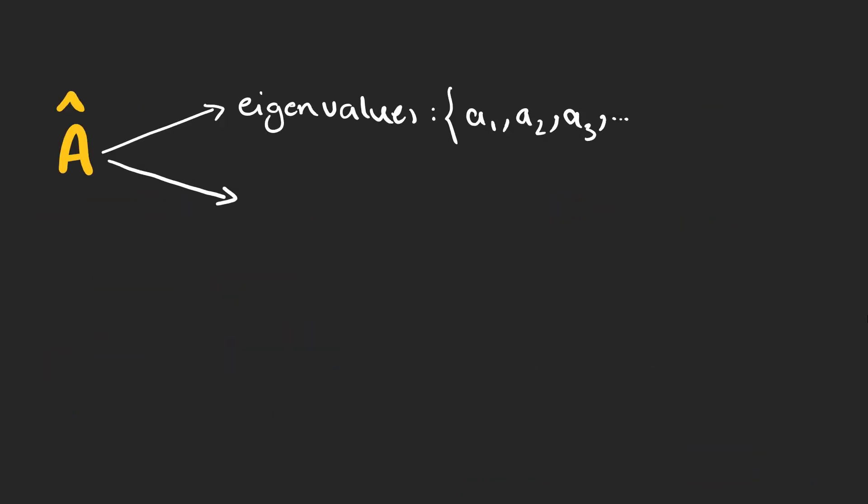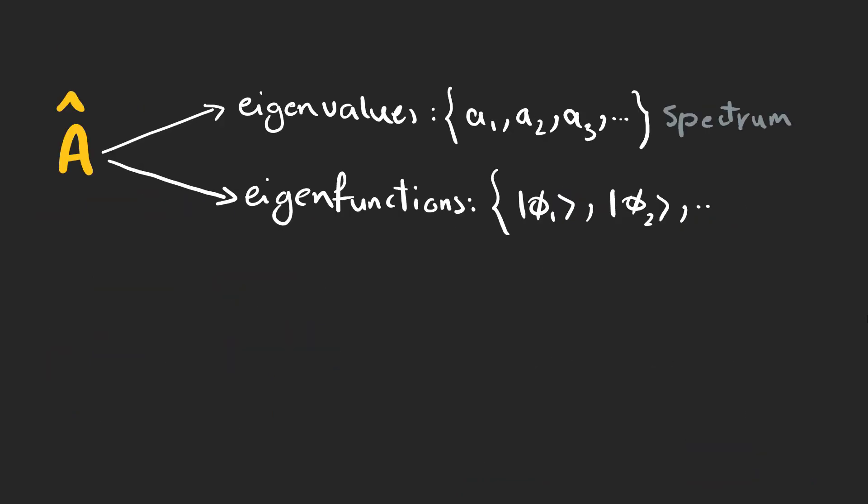The set of all possible eigenvalues for our Hermitian operator is called its spectrum, which can be discrete or continuous. The interesting thing is that we can write the wave function of the particle as a linear combination of these eigenvectors.